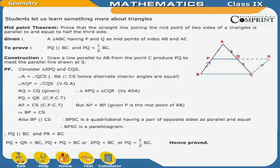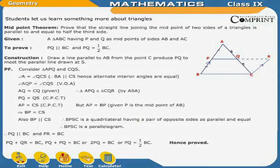Proof: Consider triangles APQ and CQS. Angle A is equal to angle QCS, since BA is parallel to CS — alternate interior angles are equal. Angle AQP is equal to angle CQS — vertically opposite angles. AQ is equal to CQ — given. Therefore, triangle APQ is congruent to triangle CQS by ASA congruence. So PQ is equal to QS by CPCT, and AP is equal to CS by CPCT.